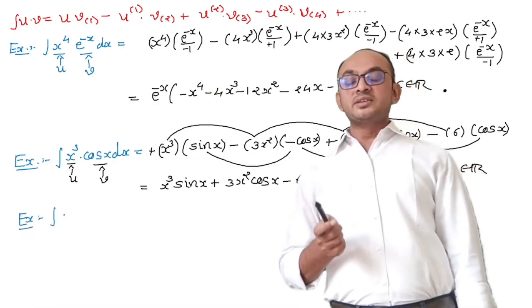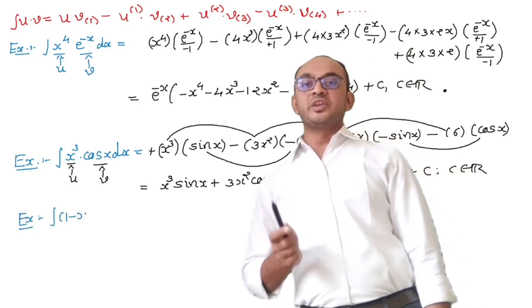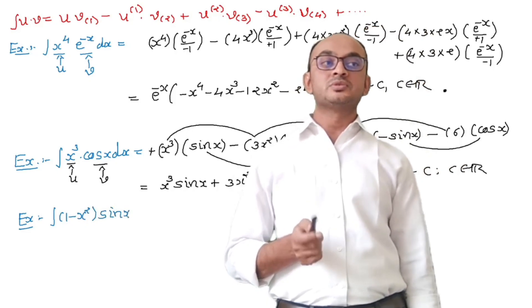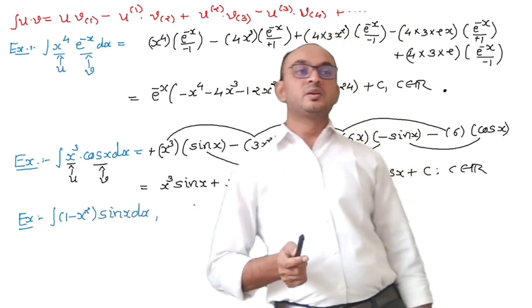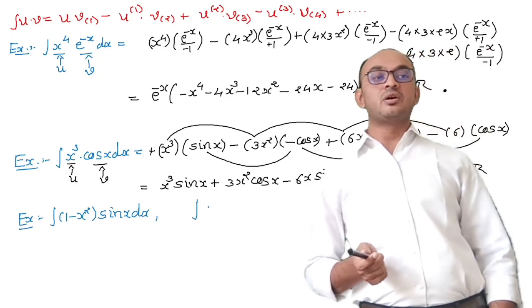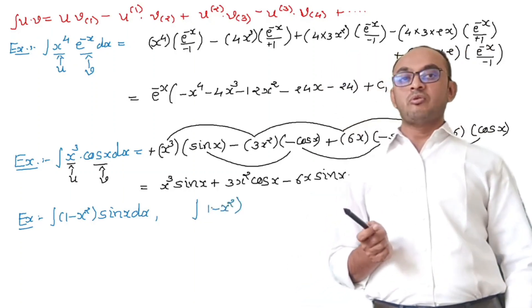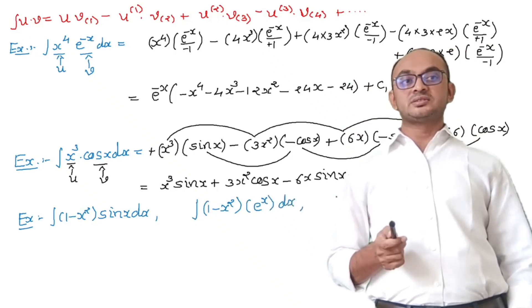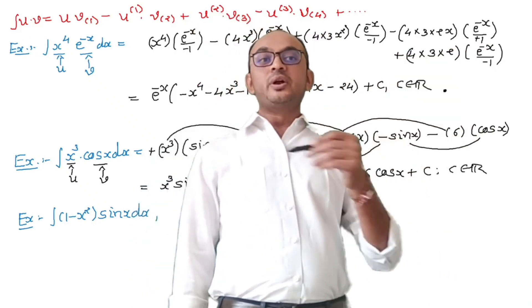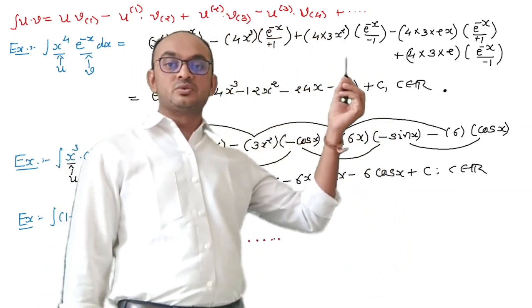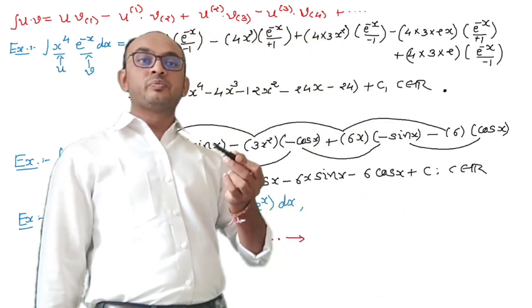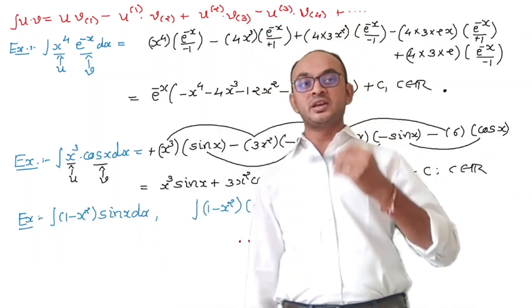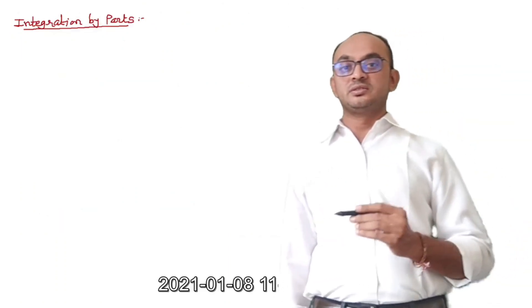Here are some more examples for practice: the integral of (1 − x^2)·sin(x) dx, and the integral of (1 − x^2)·e^x dx. In unit number 3, Fourier series, we use this rule to evaluate Fourier coefficients. In the next video we shall do more practice on these kinds of examples with limits of integration. Thank you.